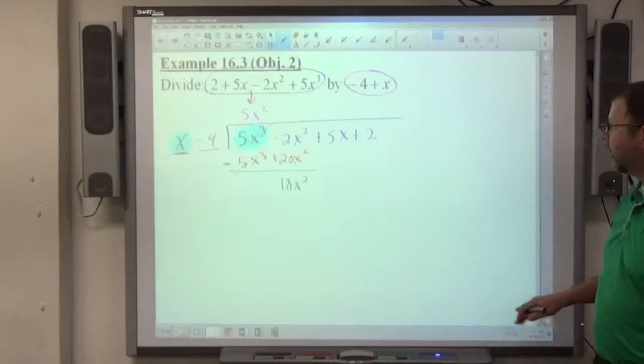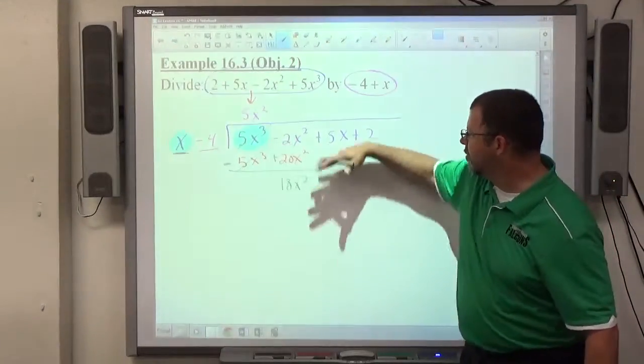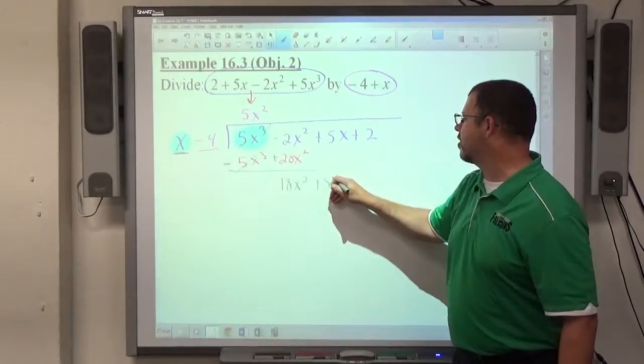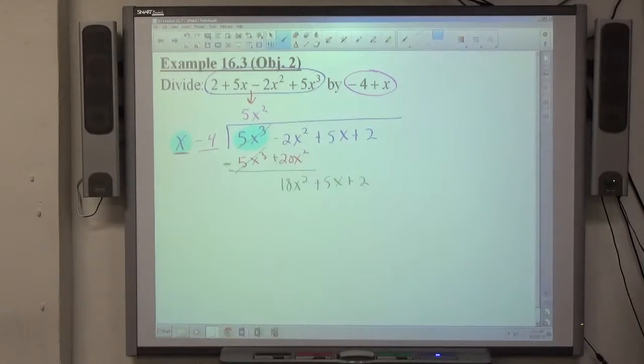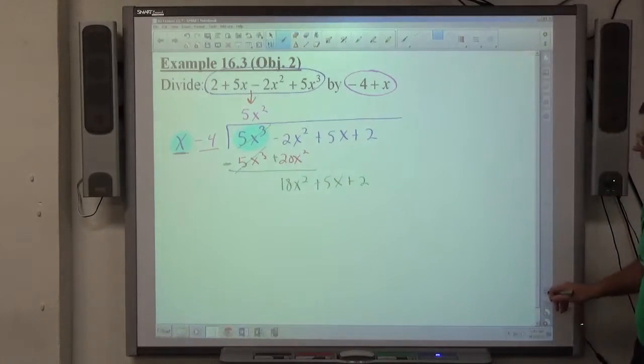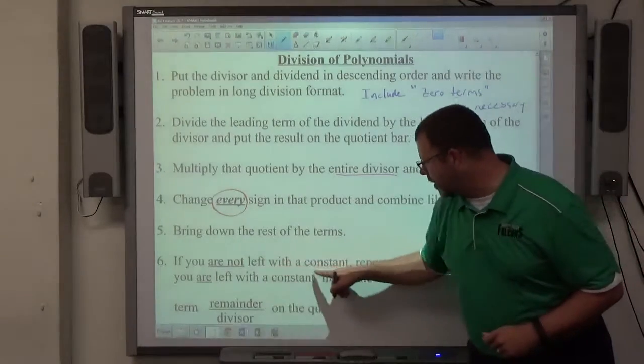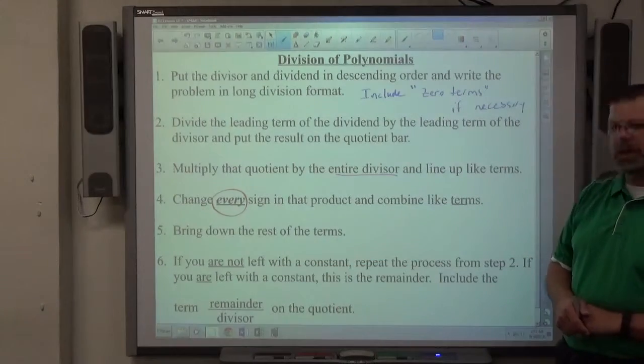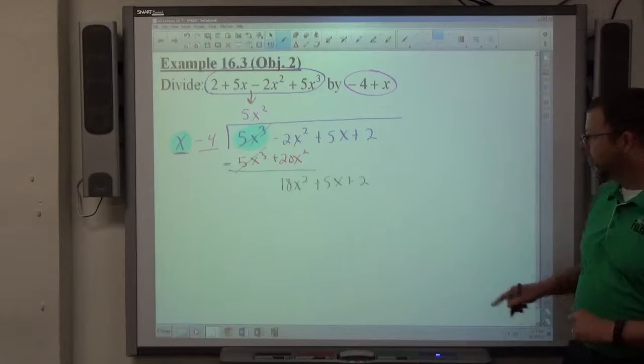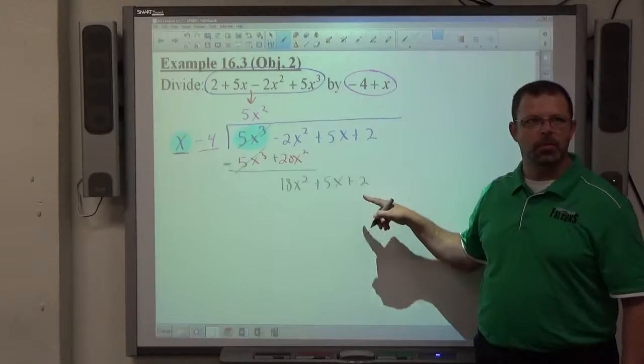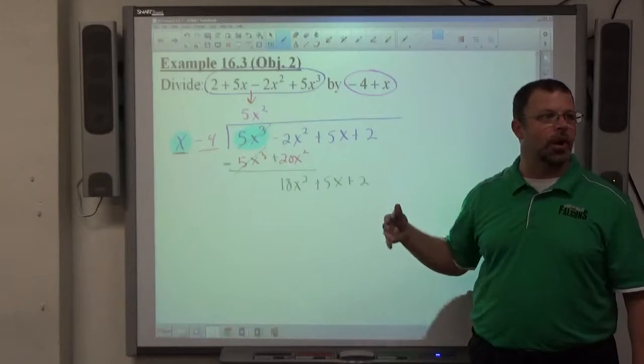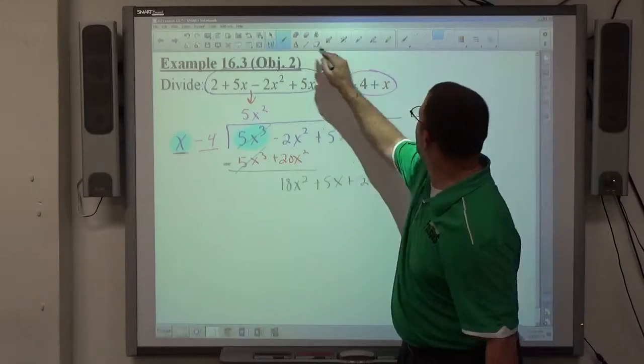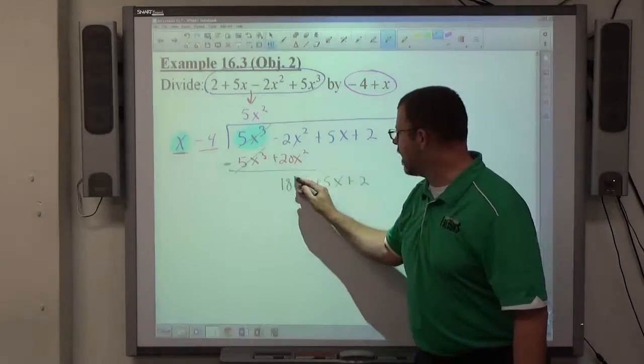And that's what step 4 is telling us to do, combine like terms. Step 5, bring down the rest of the terms. So that's what I got out of my first division, bring down the rest of the terms, plus 5x plus 2, and now I'm down to this point. At which point, step 6 says, if you are not left with a constant, repeat the process from step 2. A constant is 2, or 10, or negative 5. If you still have x's, you've got to go through the whole division process again. So we're going to do this whole process again. We're going to do it a little quicker this time because now we're getting better at it.